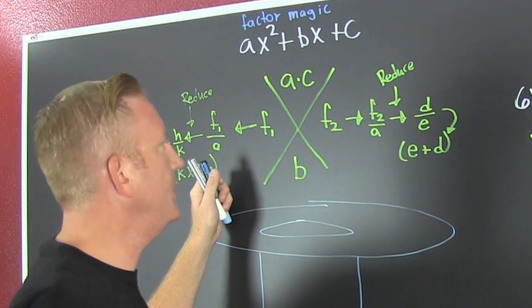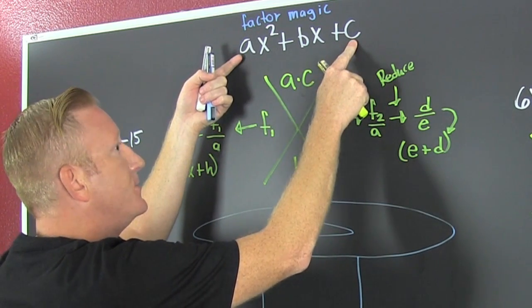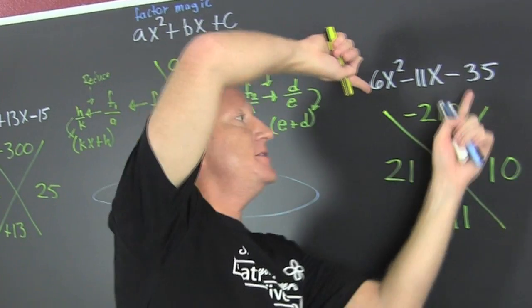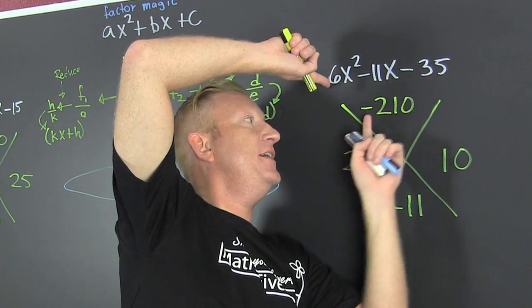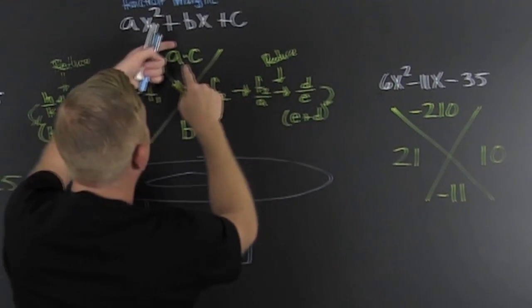The first thing we do is we take the product of a and c. What's that? The leading and lagging terms. So if I was over here, 6 times minus 35 is minus 210.